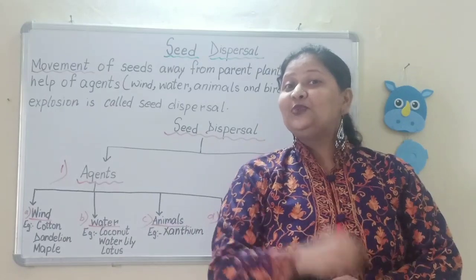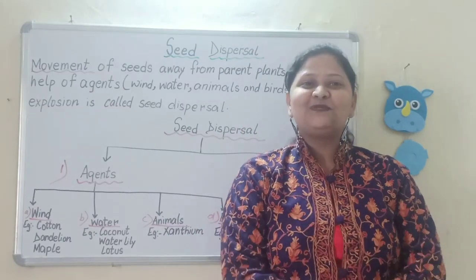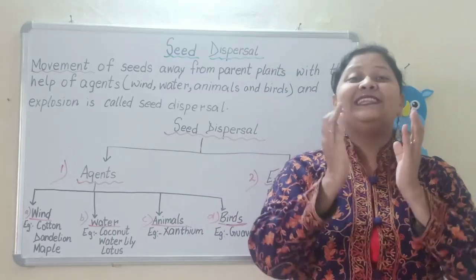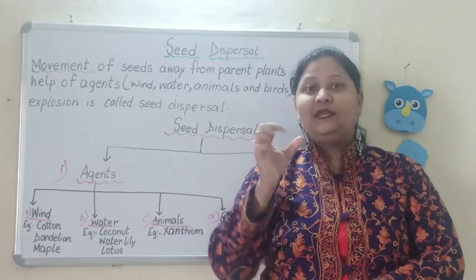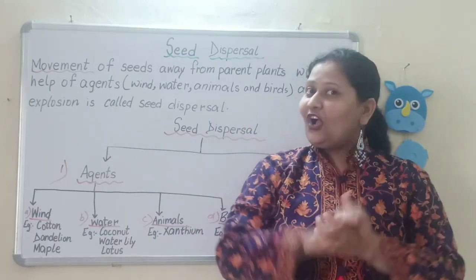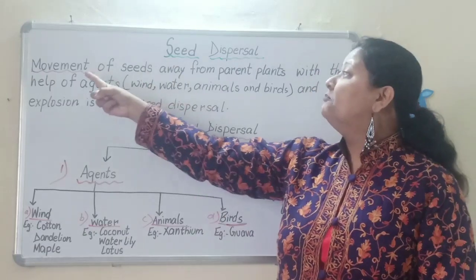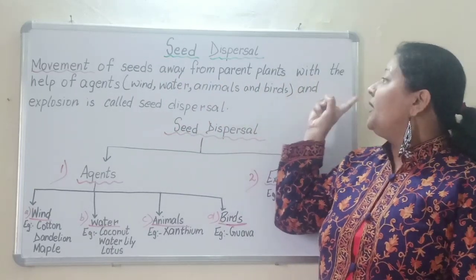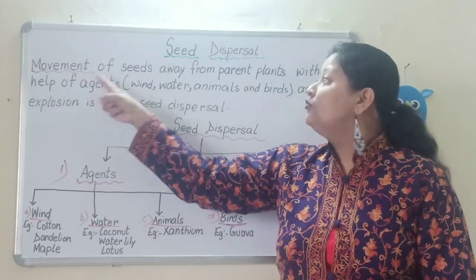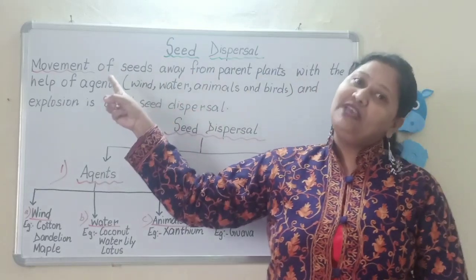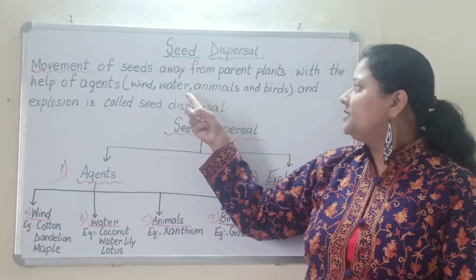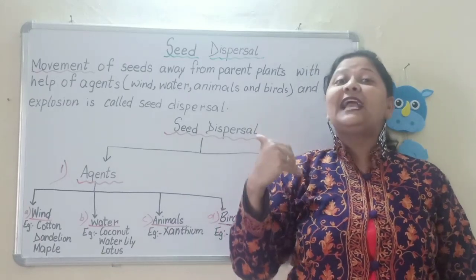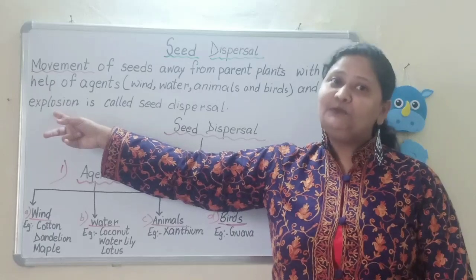So here we come to the main point — that is the need for the dispersal of seed, that is seed dispersal. Whenever we start any topic, we should know the literal meaning. Dispersal means spreading from one place to another. When we are talking about dispersal of seed, it is the movement of seeds away from parent plants with the help of agents. And what are these agents? Wind, water, animals and birds. Apart from the agents, there is one more method — that is explosion.